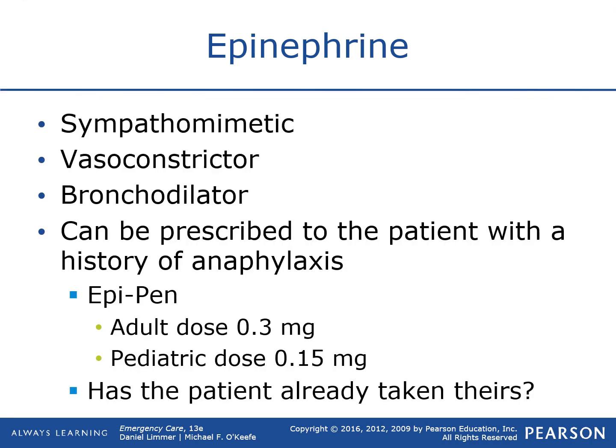Epinephrine falls under the sympathomimetic drug class. It works on several levels of the sympathetic nervous system. First, it's a vasoconstrictor — it constricts your vasculature and raises blood pressure. This is very important in allergic reactions, where vasculature dilates and tanks blood pressure. Second, it's a potent bronchodilator — it opens up your bronchioles, similar to albuterol but arguably more effective. Those are the two big actions: vasoconstriction and bronchodilation.